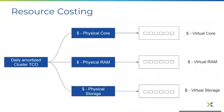The monthly amortized cluster cost is then converted to a daily amortized cost. The daily amortized cost is then split between cost of physical core, physical memory, and physical storage based on the cluster's configuration. This physical cost is then distributed to the virtual core, memory, and storage based on the individual VM or resource configuration.